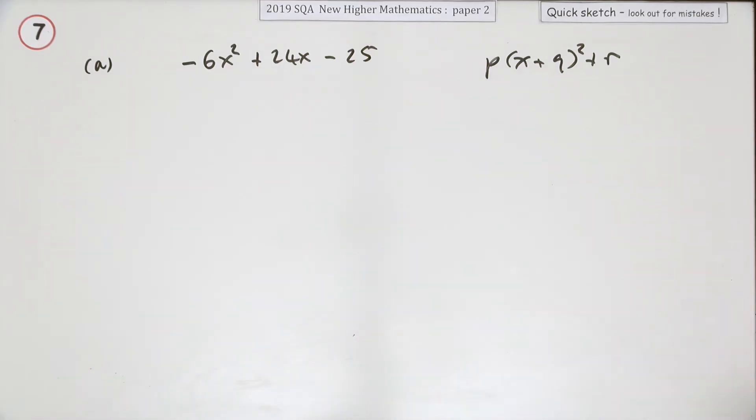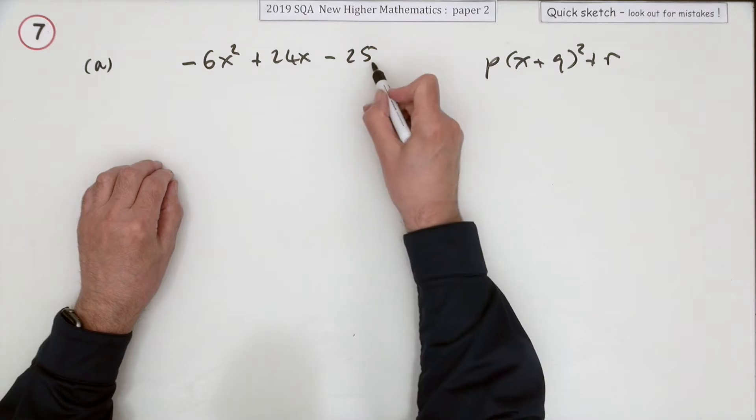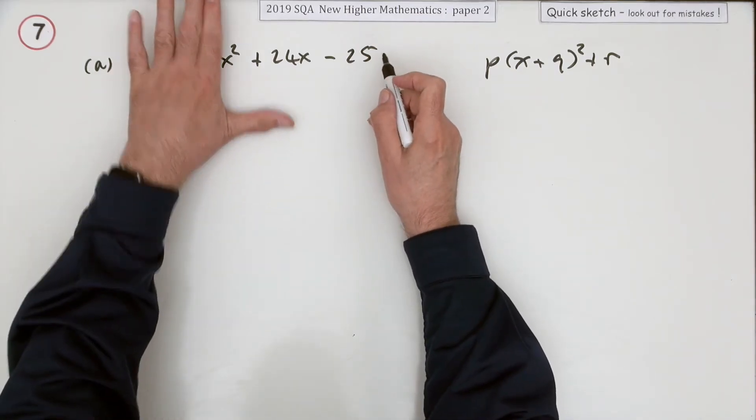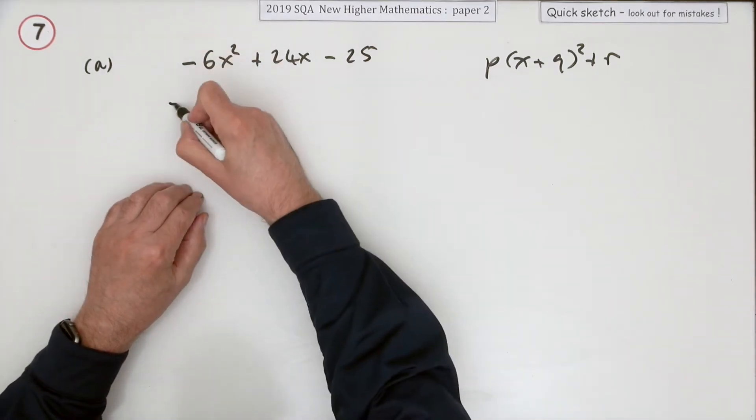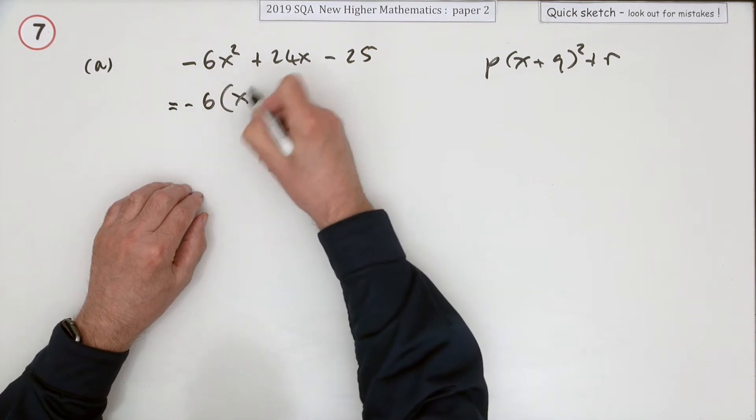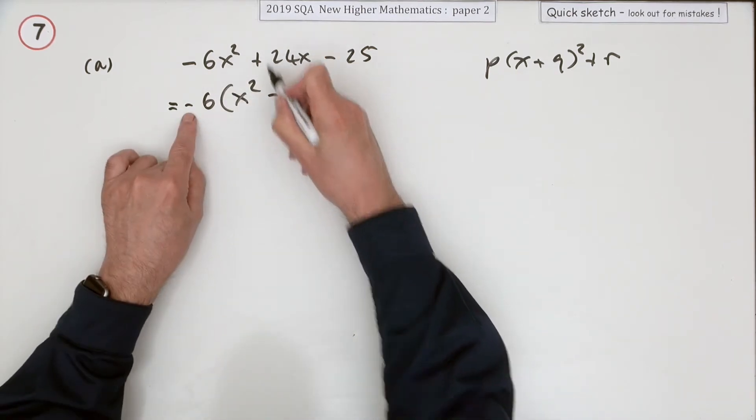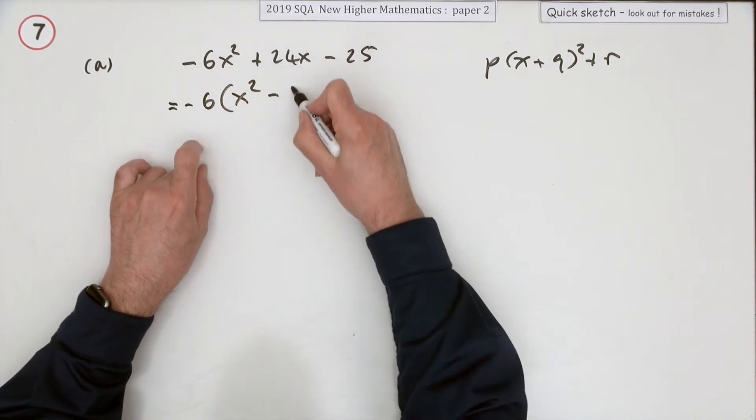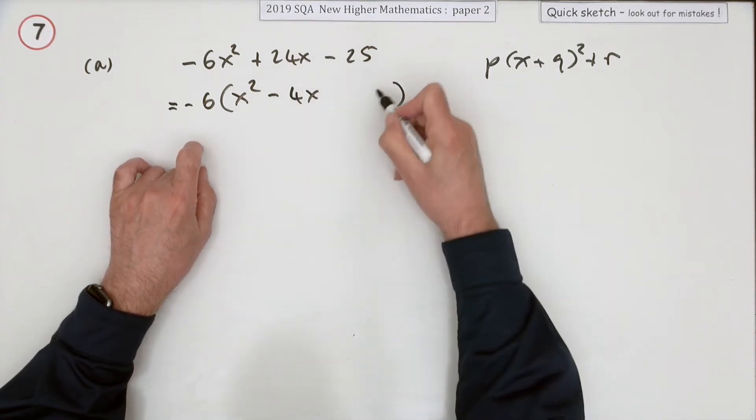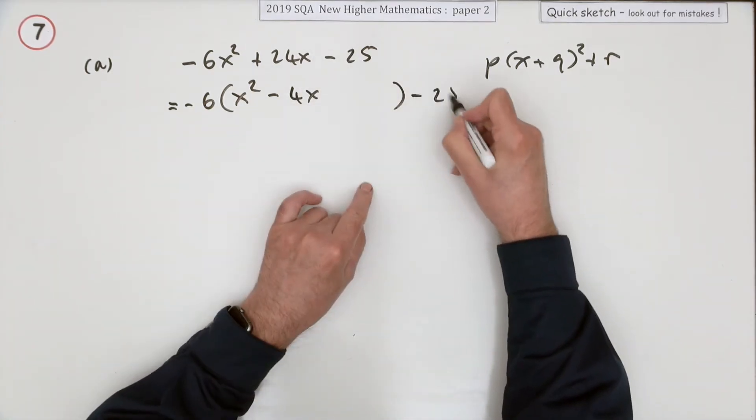It's always easy completing the square if it just says x squared, so take the negative six out of it. That'll leave x squared, it'll have to be a minus to go back to the plus, and six into that goes four.